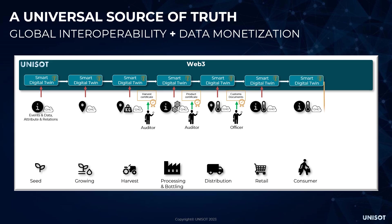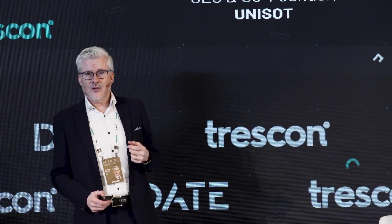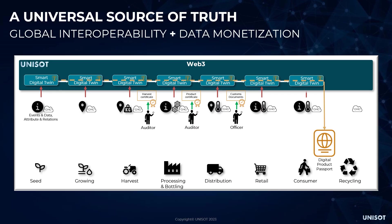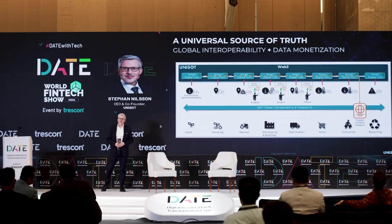The end consumer can scan the QR code and get the digital product passport I was talking about. By collecting all the information from all the digital twins in the blockchain, we have this provable information — which is of course very useful for recycling and reuse of products. This creates what we call 360 global interoperability between all the different actors in the global supply chain.